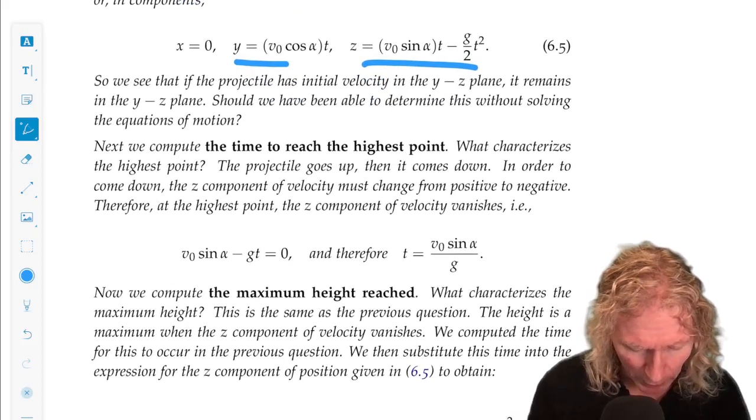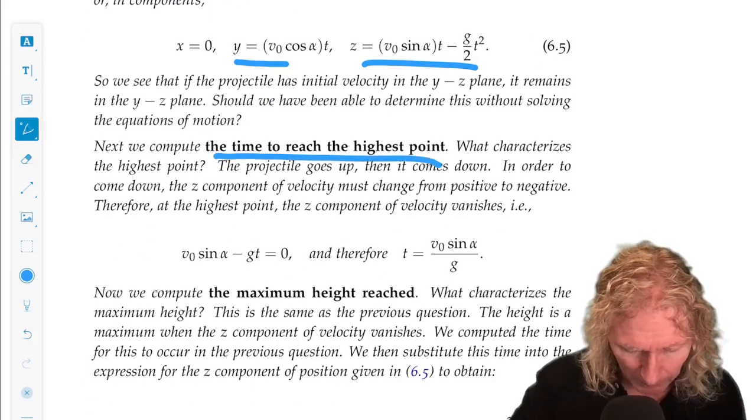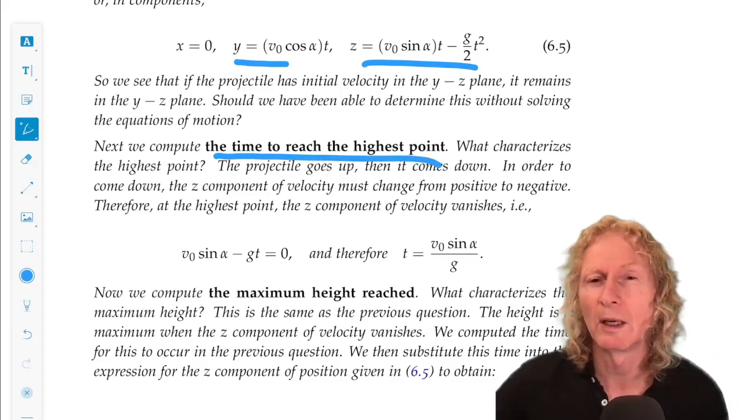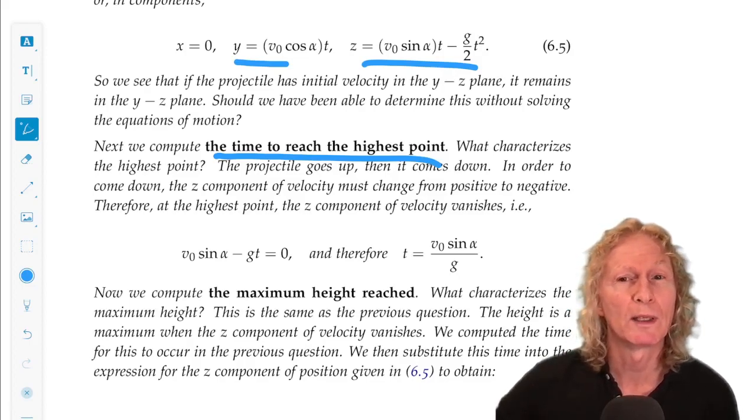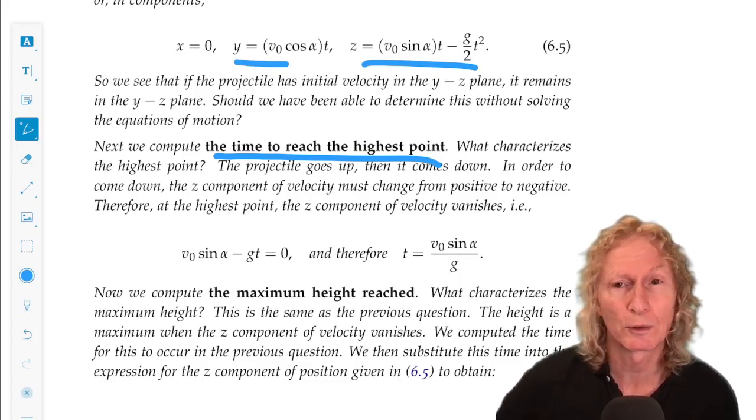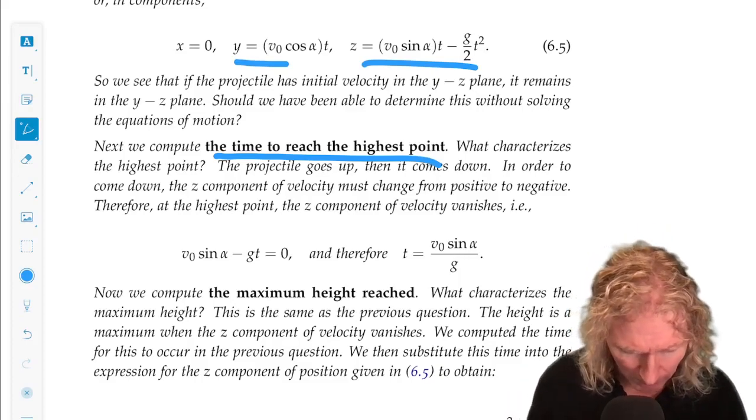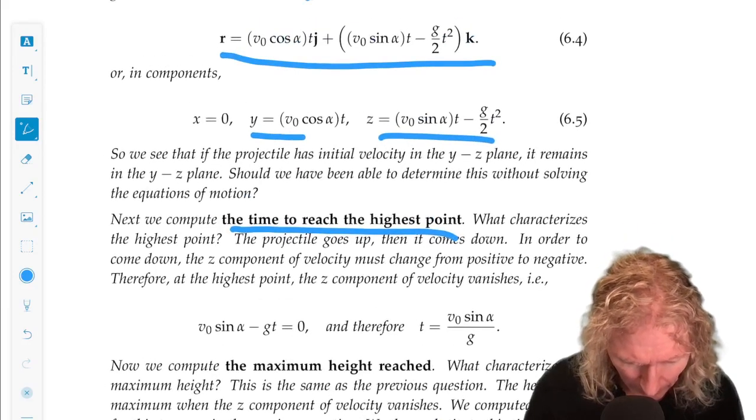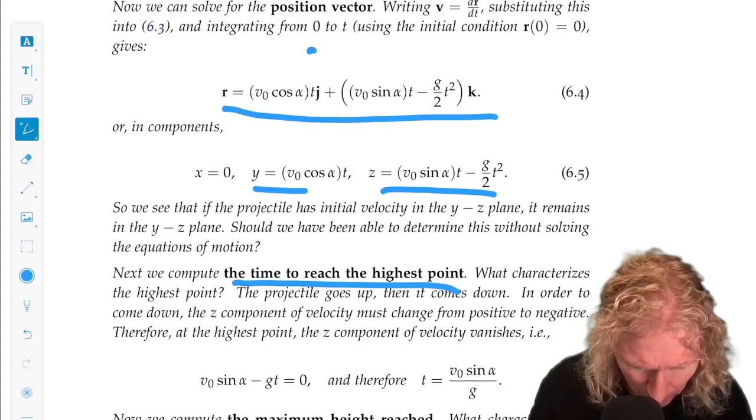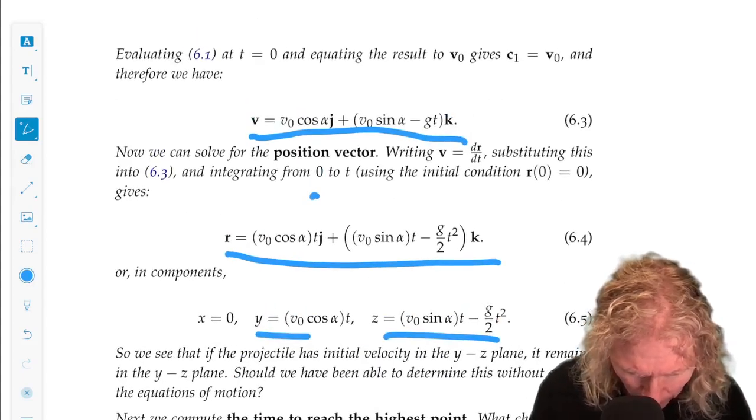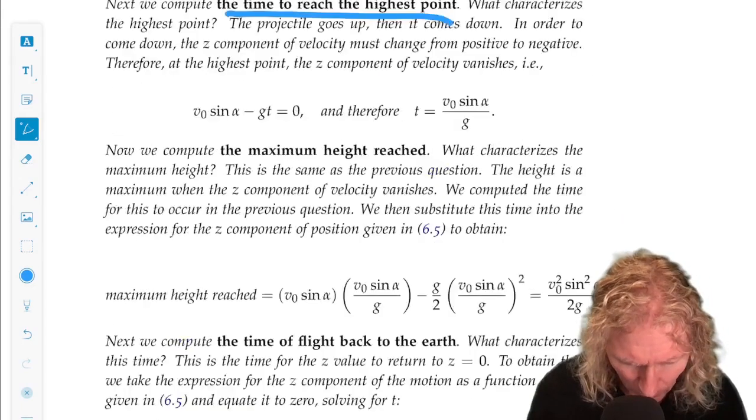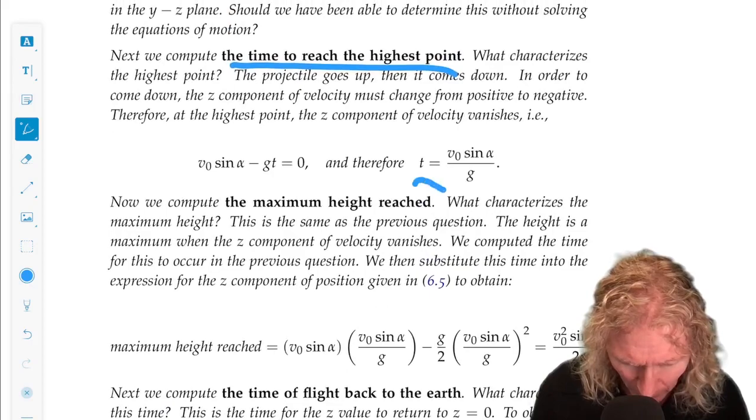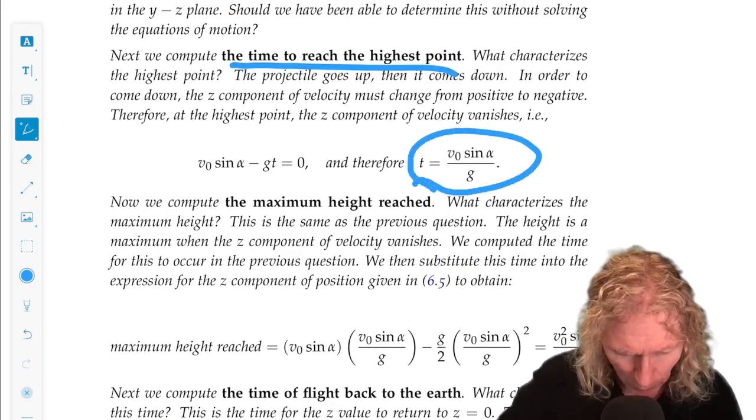So the first question is the time to reach the highest point. Now we have to ask, what does that mean, highest point? It goes up with some velocity. And it stops going up when its velocity in the vertical direction is zero. And for a velocity in the vertical direction, we set that equal to zero. And we get this expression for the time to reach the highest point.